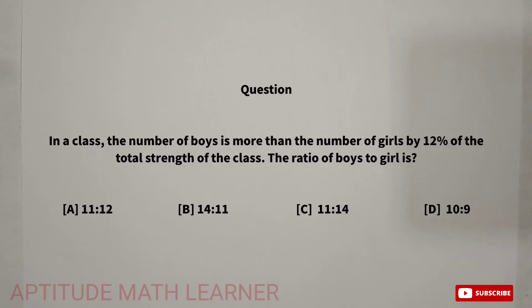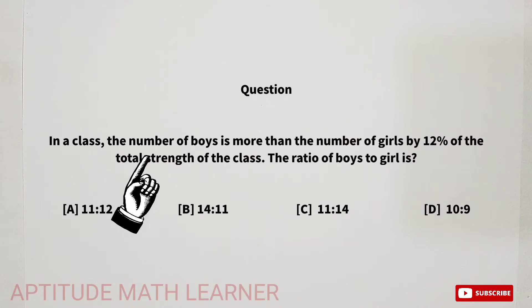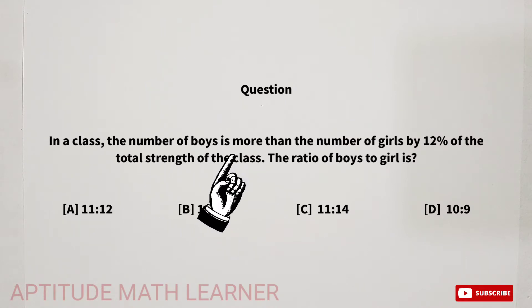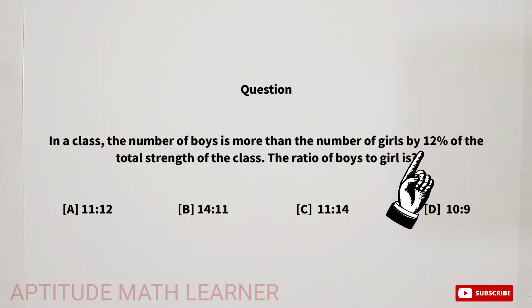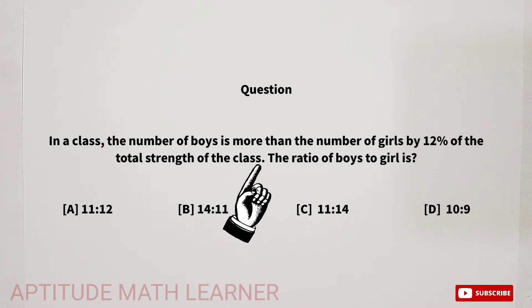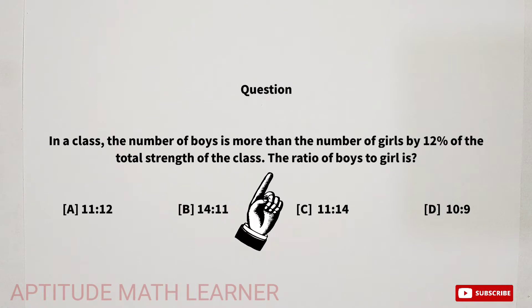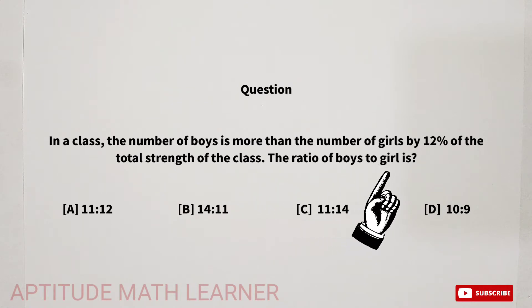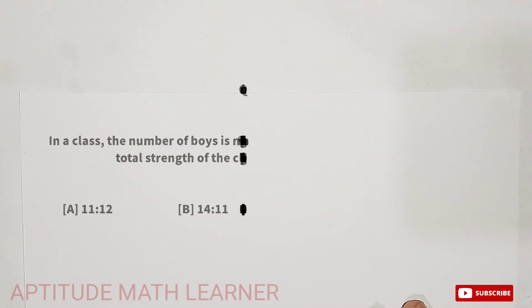Let's begin with our question: In a class, the number of boys is more than the number of girls by 12 percent of the total strength of the class. We have to find the ratio of boys to girls.